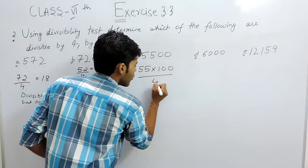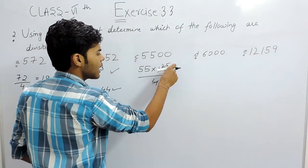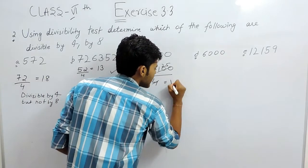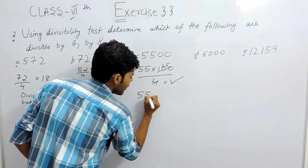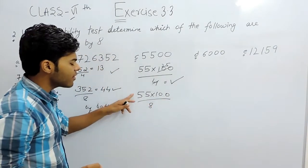So it will be divisible by 4. But for 8, if we write 55 times 100 upon 8, then 55 is also not divisible by 8 and 100 is also not divisible by 8.